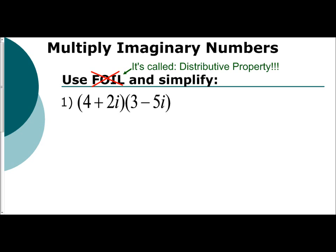When multiplying imaginary numbers, we can see here we have 4 plus 2i, that quantity times quantity 3 minus 5i. Now, many people would say use FOIL. I do not like FOIL. It is an acronym to help remember the distributive property. What I want you to realize is all FOIL means is just distribute — you do the distributive property. Every term in the first parentheses has to be distributed to each term in the second parentheses.